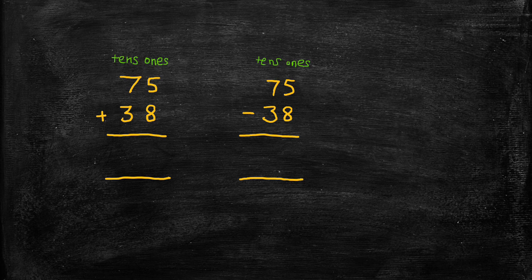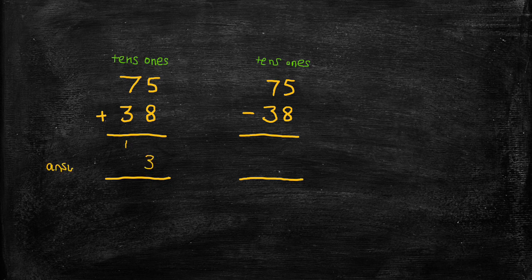And so the way I'll write that is I'll write the 1 ten here, and I'll write the 3 ones here, and this is going to be my answer row.